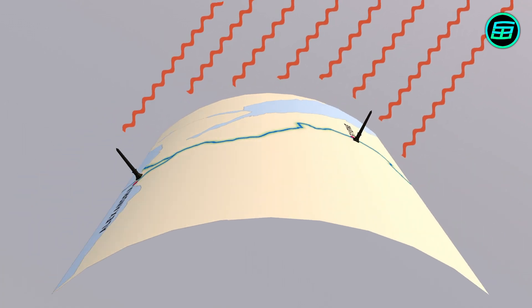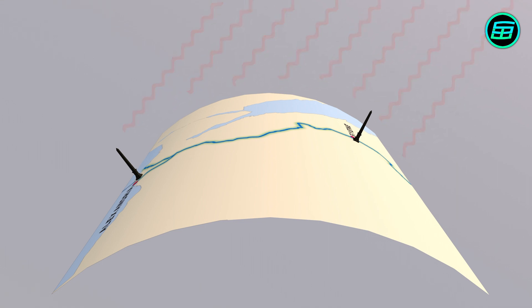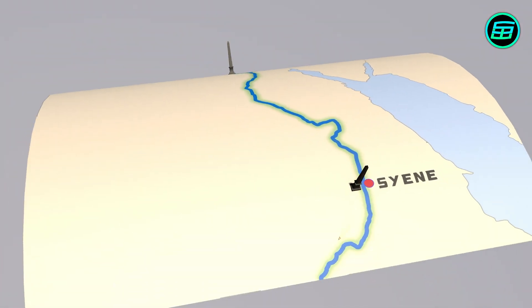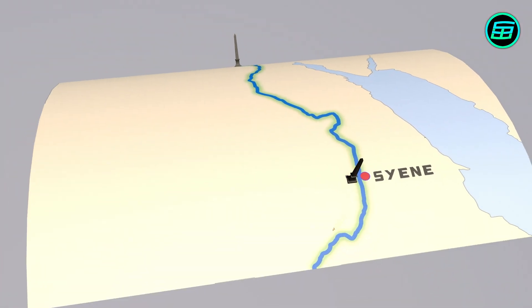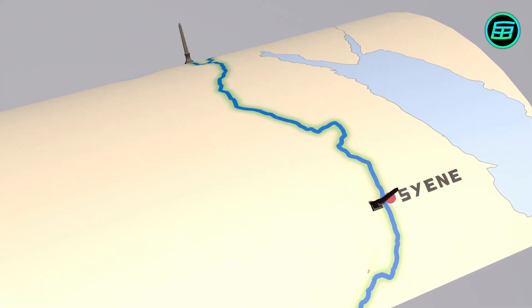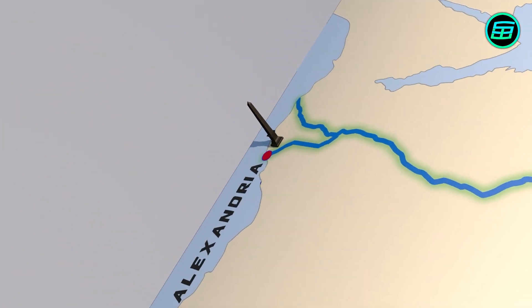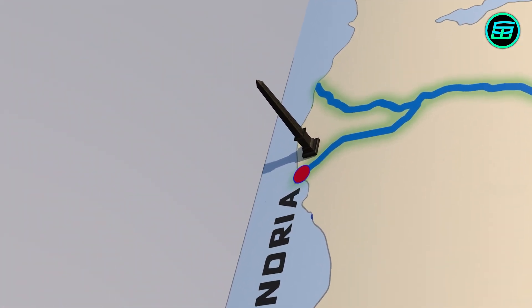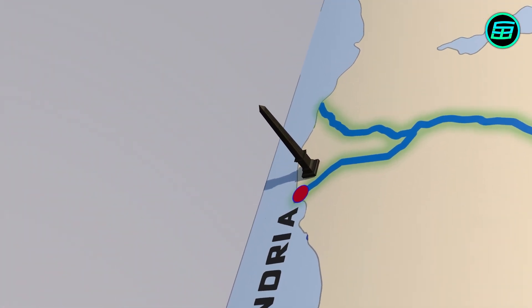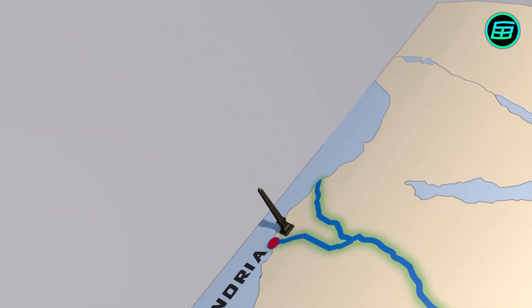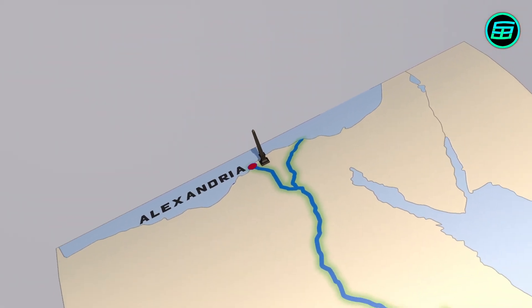That idea had already been suggested by some prominent thinkers such as Pythagoras and Aristotle, so it wasn't a surprise. But Eratosthenes figured out he could measure the Earth's circumference by using shadows.